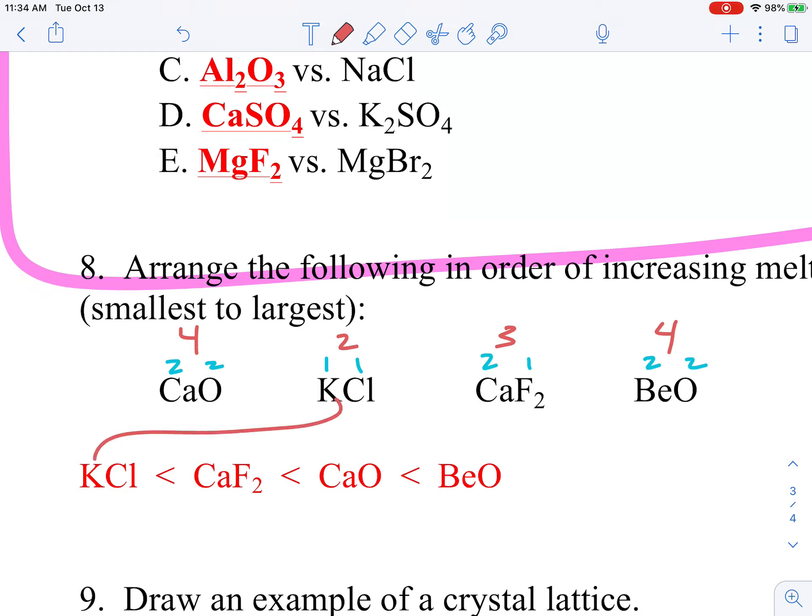So I have my weakest one, and then I have this one. And then I look at these two, these are the two in question, CaO. Well, they both have O, Ca and Be.